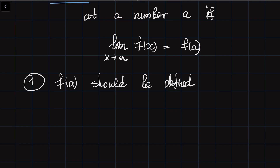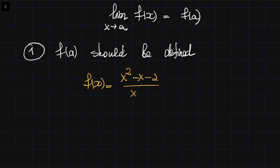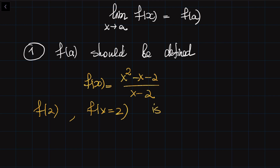Let's consider counterexamples for the three meanings of this definition. Consider the function f(x) equal to x squared minus x minus 2 divided by x minus 2. This function is not defined at x equal to 2, so f(2) simply doesn't exist — it's not defined.